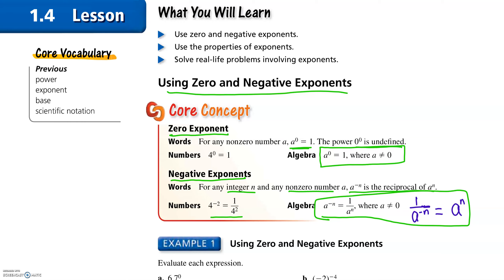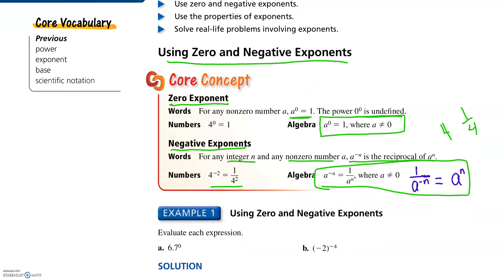You might remember the reciprocal of four is one-fourth. What that means is we multiply them together and they create one. So a to the negative n and a to the n are reciprocals — we multiply them and they create one. Now we're going to do some examples.